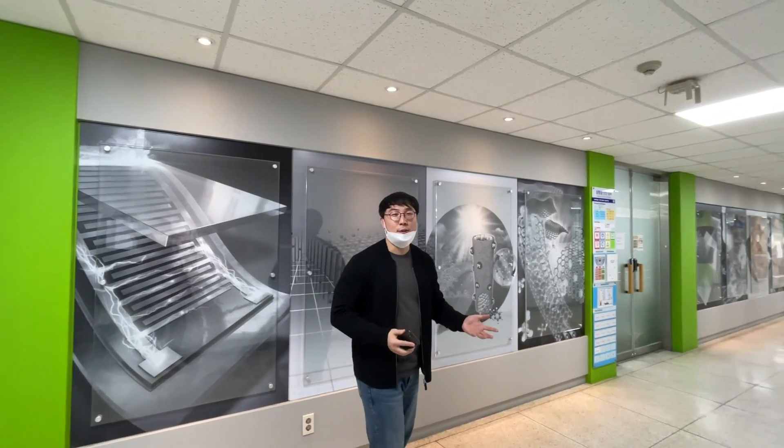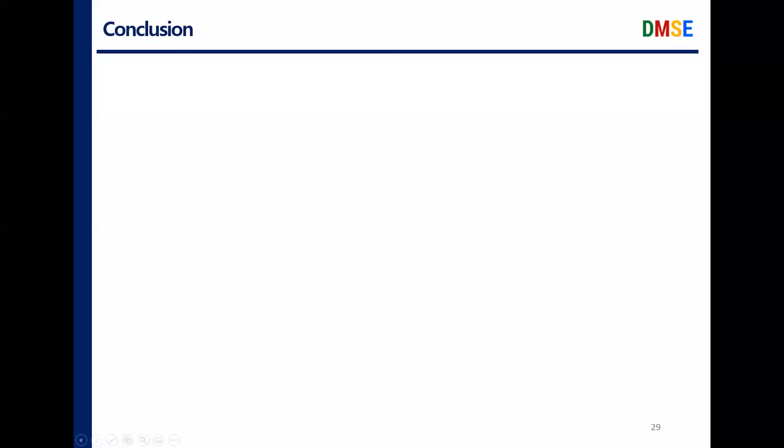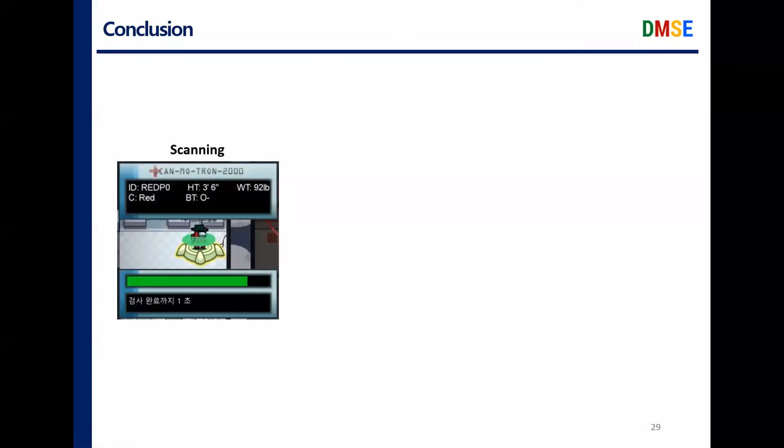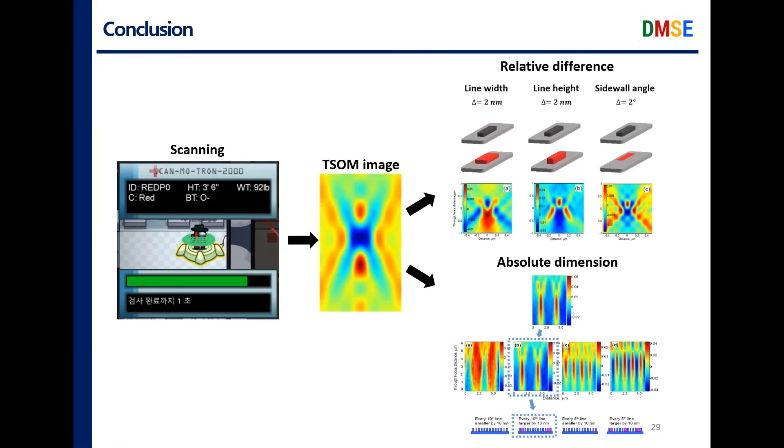Have you all enjoyed our show? Let me wrap up our topic a little quick. The first step in the TSOM method is scanning. The target will be scanned through different positions. The acquired image is then post-processed with some technique. And this image may give us a relative difference or an absolute dimensional information.